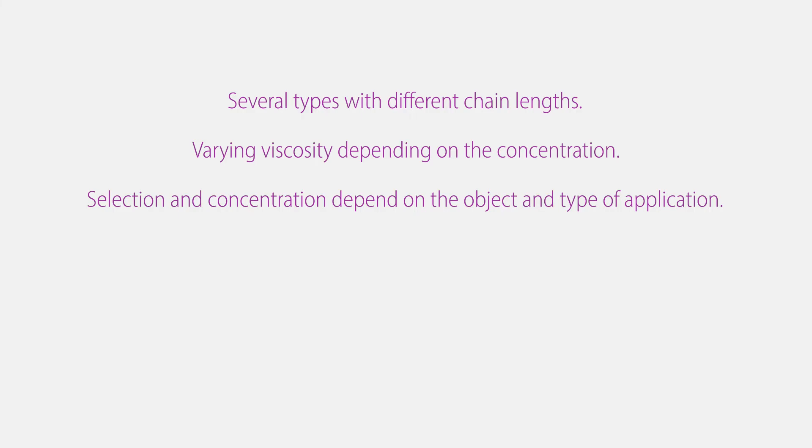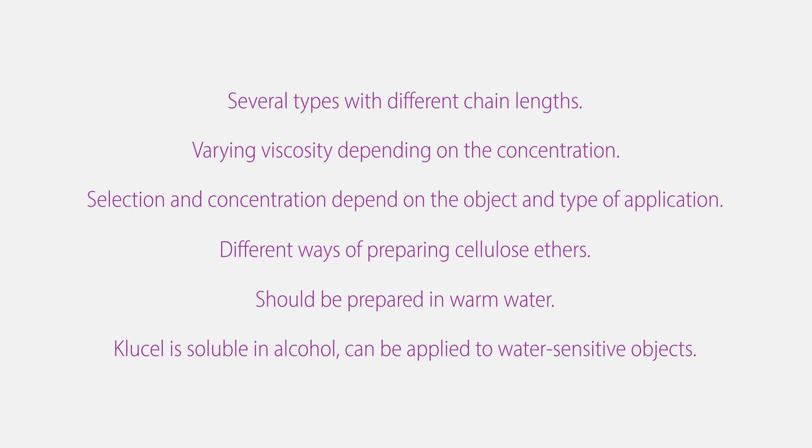There are several types of cellulose ethers with different chain lengths. These result in varying viscosity depending on the concentration. The selection and concentration of the cellulose ether depend on the object and type of application. Also, there are different ways of preparing cellulose ethers. As a general rule, they should be prepared in warm water to prevent the formation of lumps. CluCell is soluble in both water and alcohol, so it can also be applied to water-sensitive objects.